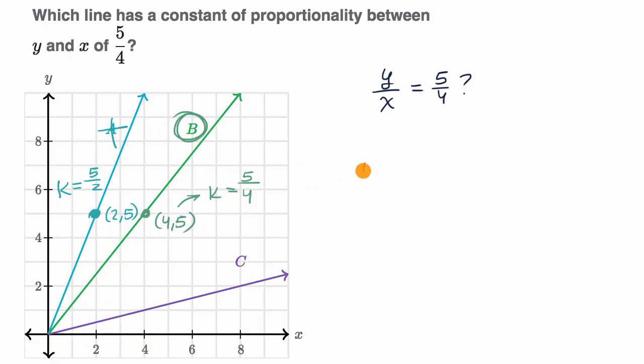What about a situation where y is equal to x? What is the constant of proportionality then? And what would it look like as a line? Pause this video and think about it.